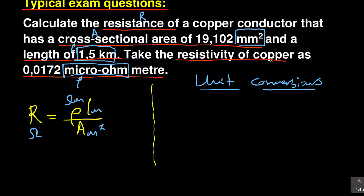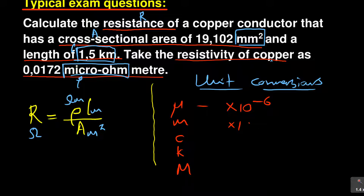Let us look at unit conversions. You might be given micro, milli, centi, kilo, or mega — these are the common ones. Micro means multiply by 10 to the power of negative 6. Milli means multiply by 10 to the power of negative 3. Centi means multiply by 10 to the power of negative 2. Kilo means multiply by 10 to the power of 3. Mega means multiply by 10 to the power of 6.